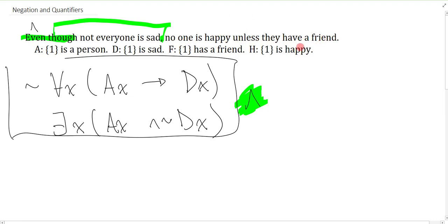I find that the easiest way to symbolize such a sentence is actually by paraphrasing it into a universal. And if I'm saying no one is happy unless they have a friend, it really seems to say everyone is unhappy unless they have a friend.